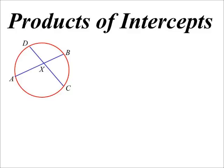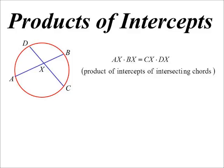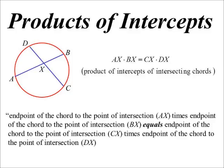In this case I've got two chords and they intersect each other. AX times BX will equal CX times DX — so the product at the point where they cut. The reason would be: product of intercepts of intersecting chords, so when two chords intersect. The endpoint of the chord to the point of intersection times the endpoint of the chord to the point of intersection equals the endpoint of the chord to the point of intersection times the endpoint of the chord to the point of intersection.